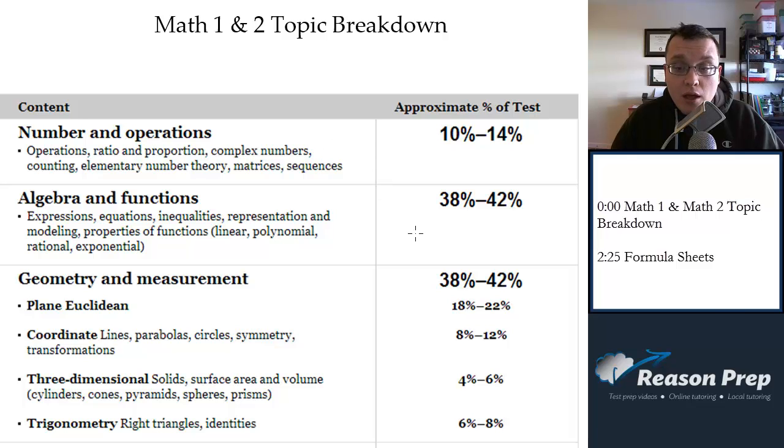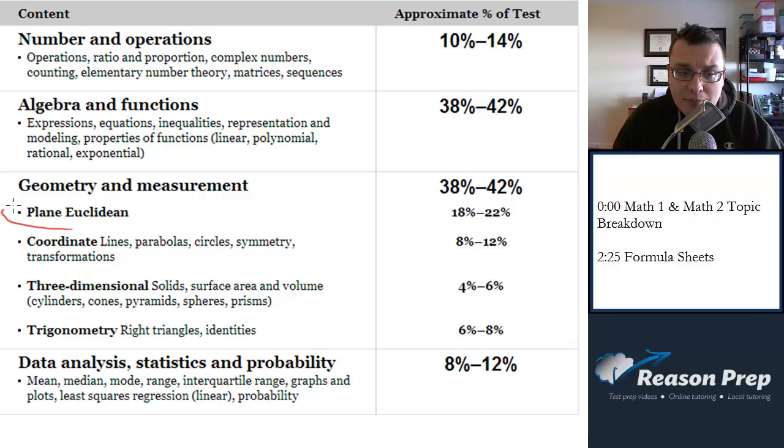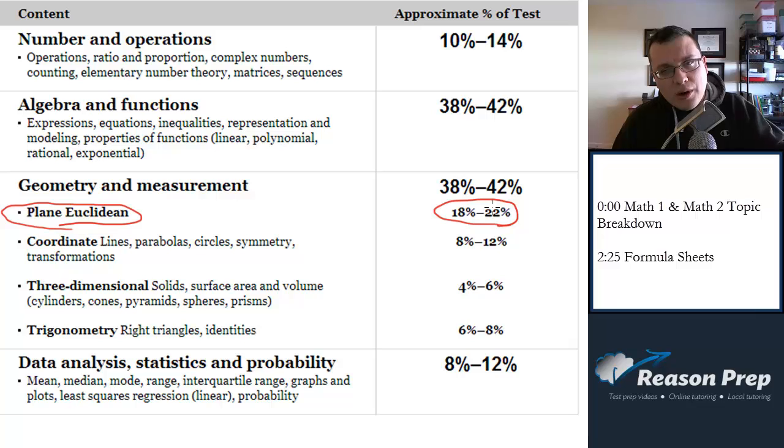Here's Math 1. You can see the majority of the test, as is typical of all SAT tests, is in algebra and in geometry. The big difference here in geometry is in Math 1, you've got this plain Euclidean geometry, things like circles and squares and areas and Pythagorean theorem and all that kind of stuff, finding the distances between things.